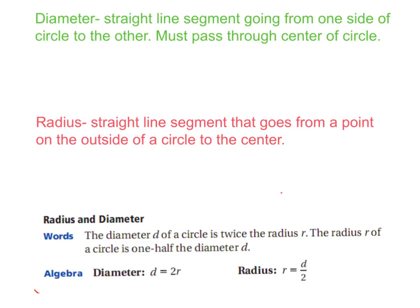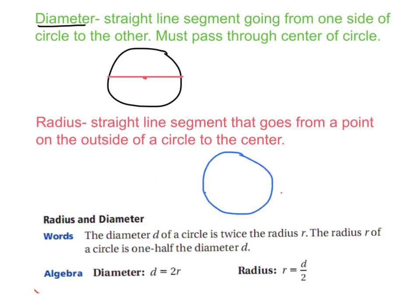We're going to get the definition of diameter and radius down. Diameter: the definition is it's a straight line that goes through the center of the circle and goes from one point on the outside to another point — that's all the way across. Radius, again, has to be a straight line; it goes from the outside of the circle to the middle of the circle.